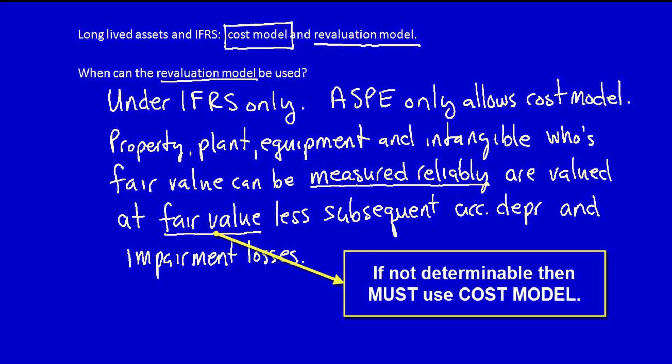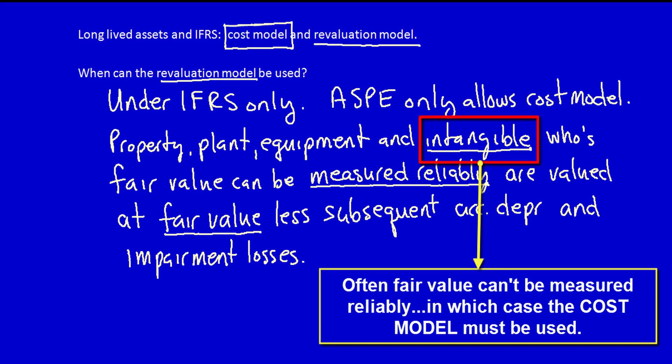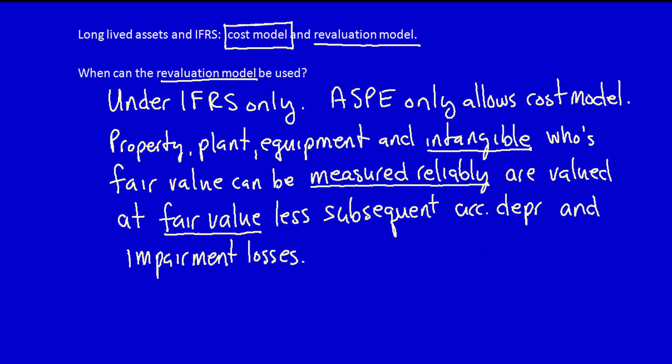If an asset's fair value can't be determined reliably, then the asset must be recorded using the cost model. Note that the revaluation model can be used for intangible assets; however, intangible assets rarely have an active secondary market. Therefore, although intangible assets can theoretically be valued using the revaluation model, if they don't meet the requirement for a reliable fair value, they must be recorded using the cost model.